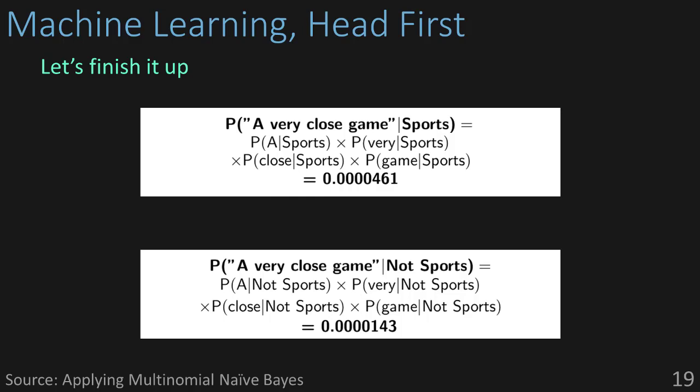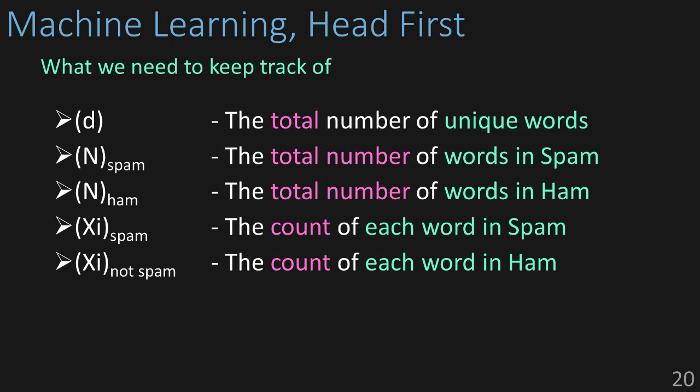That was a lot of ground to cover. Usually it's at this point where people tend to have some questions, so if you don't quite understand what we just did, I encourage you to go back and rewatch that last section. You can also comment down below and I'll be able to answer any questions you have. Now, there are five things we need to keep track of for Naive Bayes: the total number of unique words across both classes — spam and not spam, or ham as it's otherwise known — the total number of words in spam, the total number of words in ham, the count of each word in spam, and the count of each word in ham. That's it.